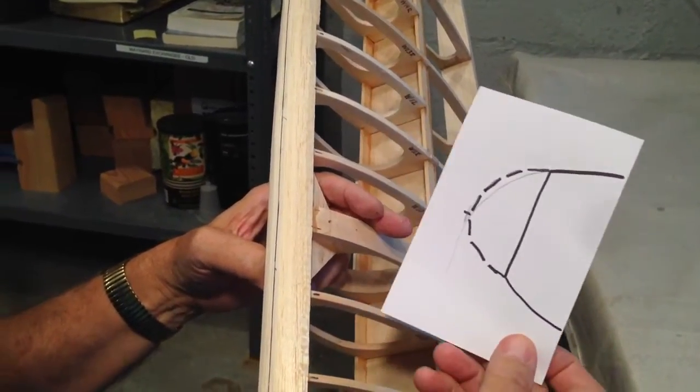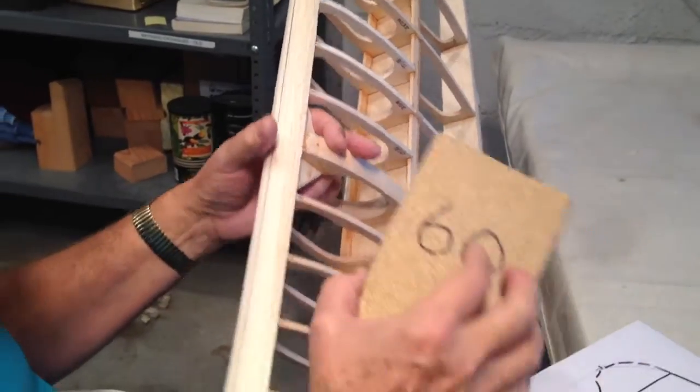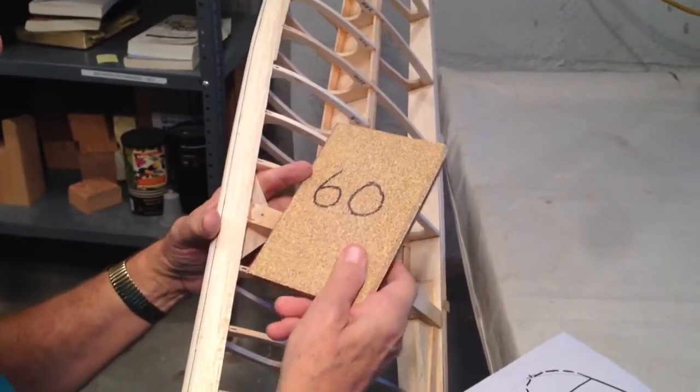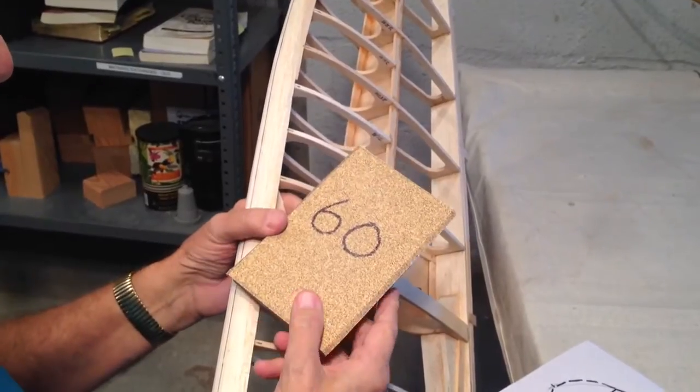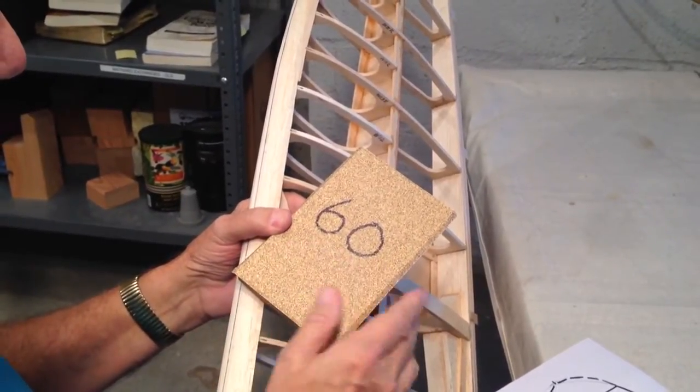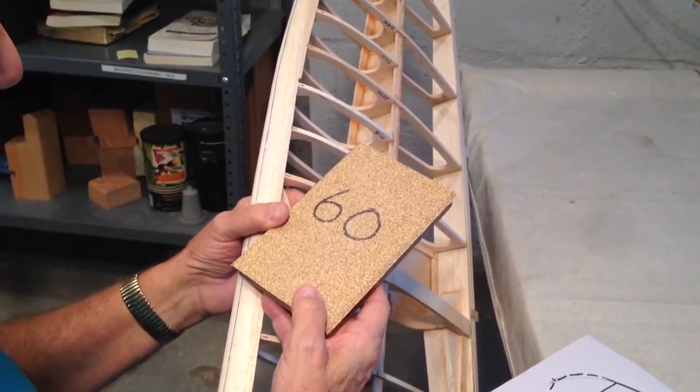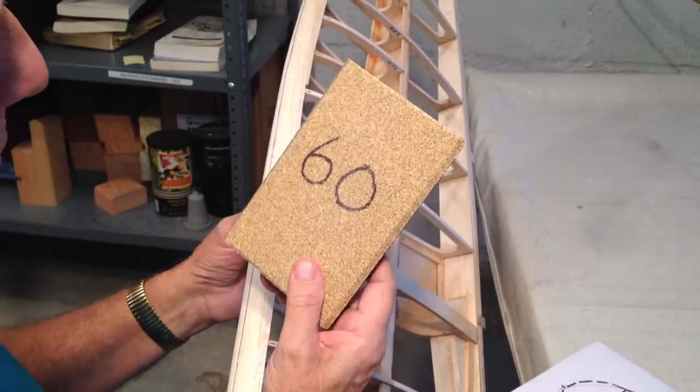Now it's time to sand. As I've said before, particularly on the videos that we did for the rudder, use a 60-grit sanding block. This is 60-grit, and use new paper.